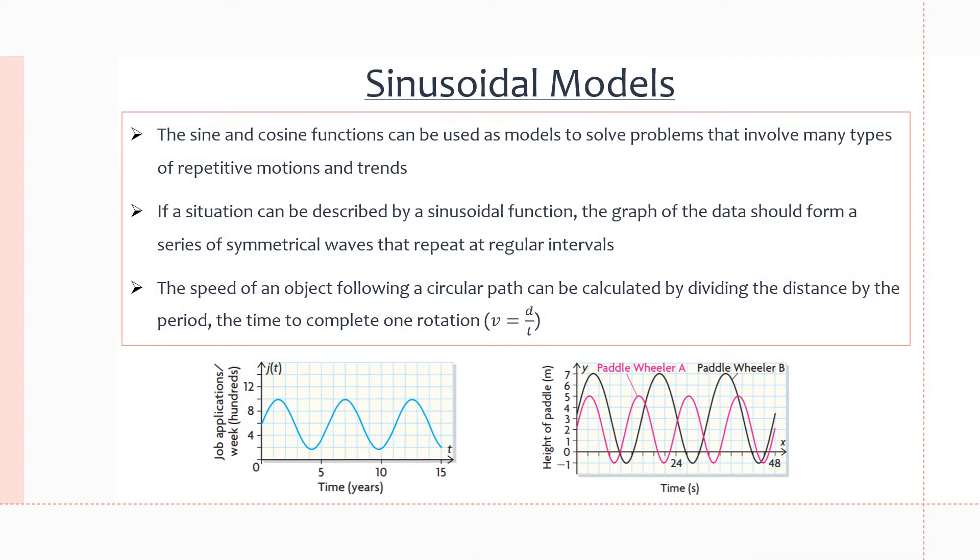Both the sine and cosine functions can be used to solve problems involving repetitive motion and trends. If a situation can be described by one of these sinusoidal functions, then the graph should have symmetrical waves that repeat at regular intervals like we have seen before.